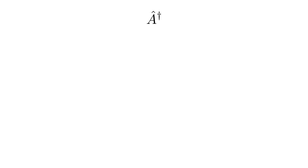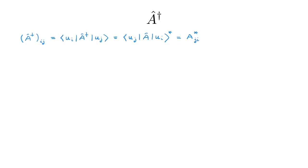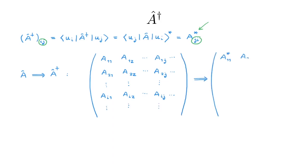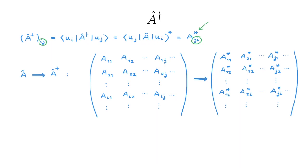The next example is the adjoint operator, which describes the action of an operator in the dual space. We start with the matrix element ij of the adjoint of A, which equals the matrix element of A dagger with respect to u_i and u_j. Using conjugation, this equals u_j A u_i star, which simplifies to the complex conjugate of the matrix element ji of A. This shows that to go from A to A dagger, we exchange the indices i and j — that is, exchange rows with columns — and then take the complex conjugate of each entry. Therefore the matrix formulation of the adjoint of an operator A is given by the transpose conjugate matrix of the original operator.